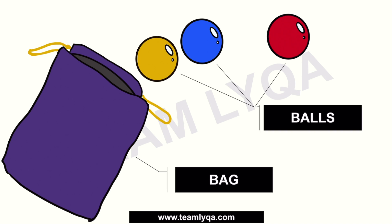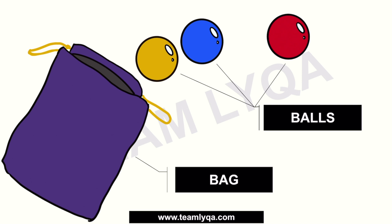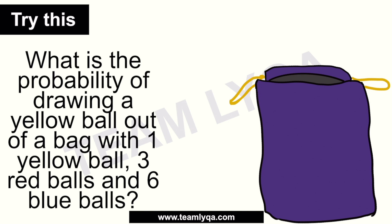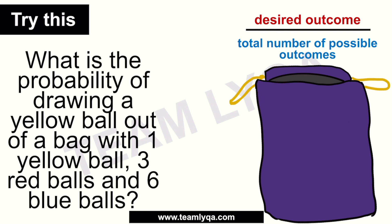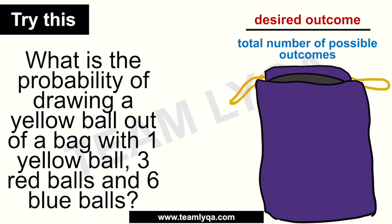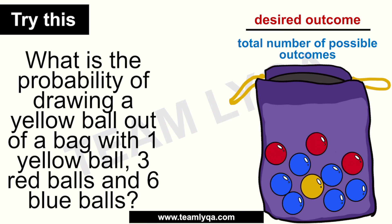Now let's visualize the image. So there is a bag, and it contains balls. Usually these balls are different colors, and it will tell you how many pieces of each color there are. That is very important because that's where our possible outcomes come in — and the total number of balls inside the bag. In this situation: desired outcome over total number of possible outcomes. The bag contains one yellow ball, three red balls, and six blue balls.